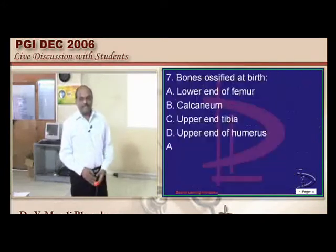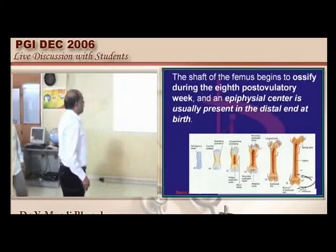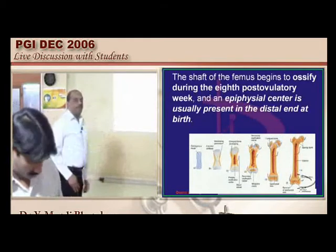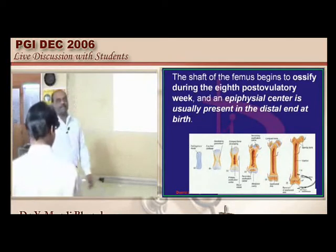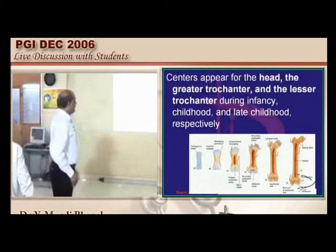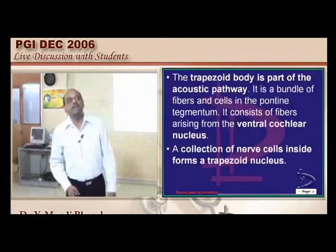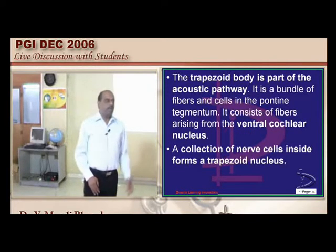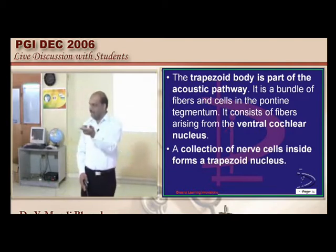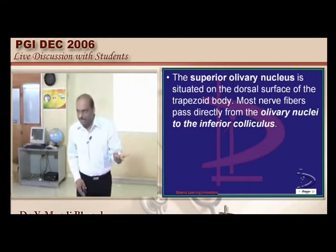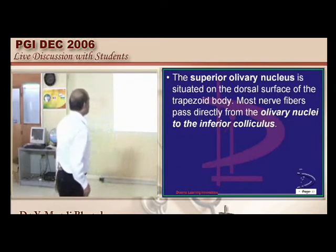Ossification centers — when do they appear? At least one question on this comes in any PGI entrance. The shaft of the femur begins to ossify during the 8th post-ovulatory week, and an epiphyseal center at the distal end is usually present by the time of birth. Then the trapezoid body — is it neurologically associated with the auditory or the visual pathway? We have two geniculate bodies and two colliculi: the superior colliculus is associated with vision, the inferior colliculus with hearing, the medial geniculate body with audition, and the lateral geniculate body with vision.